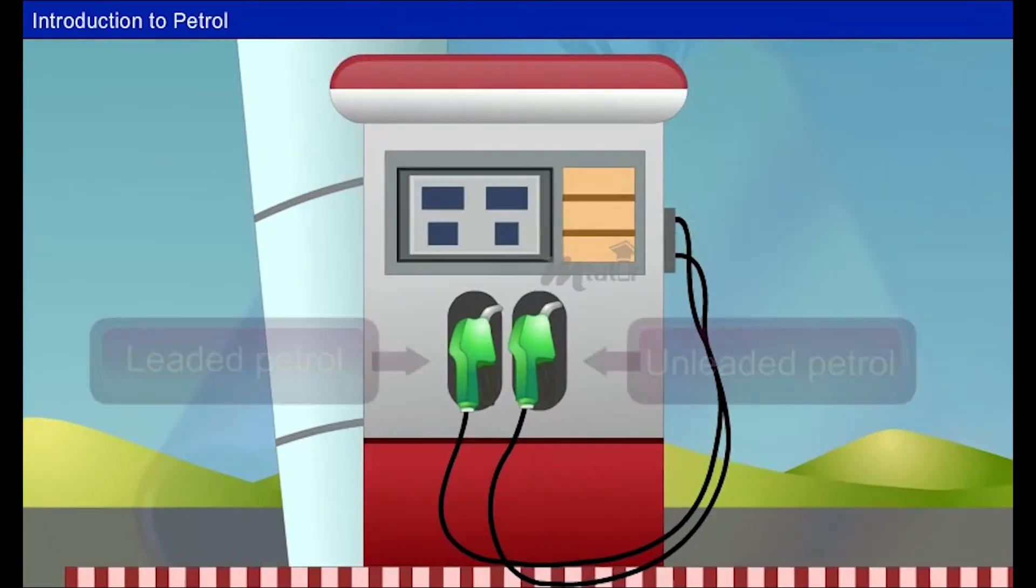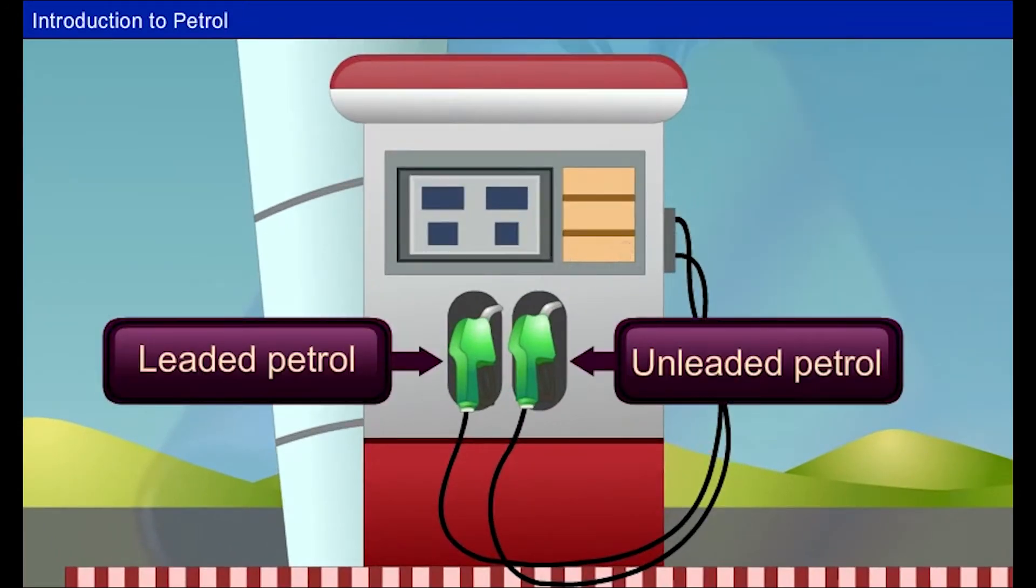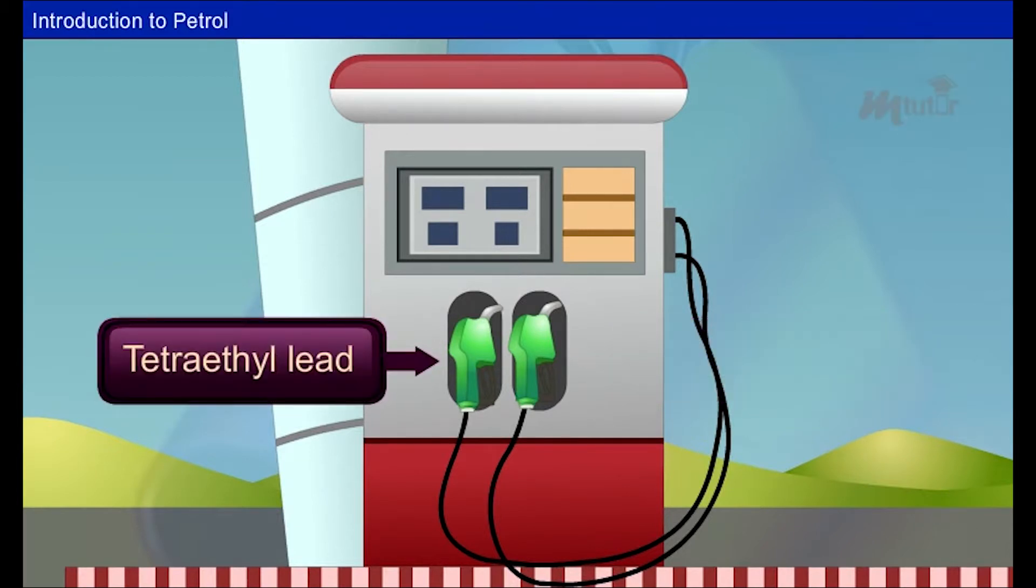When we enter the petrol bunk, we come across the board unleaded petrol or leaded petrol. What does it mean? The main difference between leaded petrol and unleaded petrol is the additive tetraethyl lead.